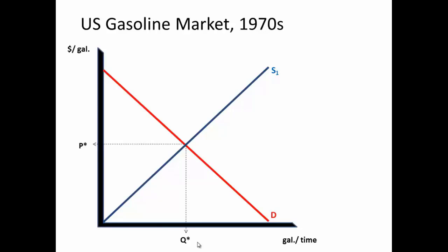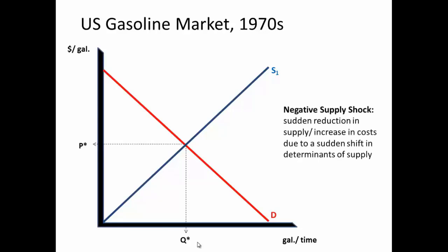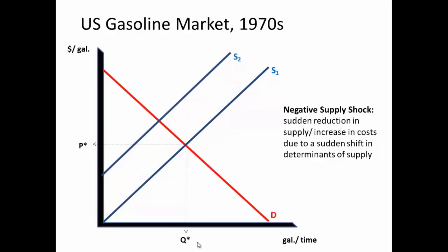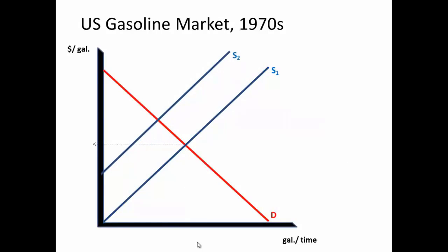Specifically, there were two big negative supply shocks in the oil market associated first with the OPEC supply restrictions in 1973–1974 and the Iranian crisis of 1979–1980.